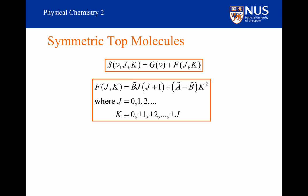Remember, this is what it looked like. J can be equal to 0, 1, 2, etc. And K can be equal to 0, plus or minus 1, plus or minus 2, all the way up to plus or minus J.